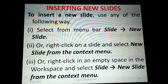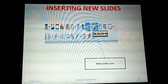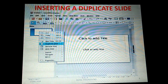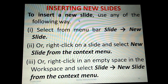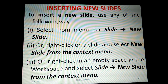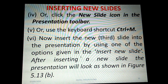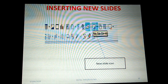The next topic is inserting new slides. To insert a new slide, first select from the menu bar: Slide > New Slide. Or right-click on a slide and select 'New Slide' from the context menu. Or right-click in an empty space in the workspace and select Slide > New Slide from the context menu. You can also click the New Slide icon in the presentation toolbar — it appears as a plus symbol alongside slide boxes.